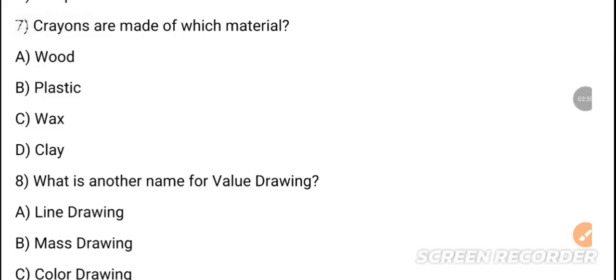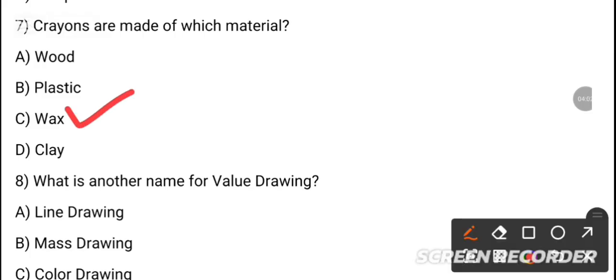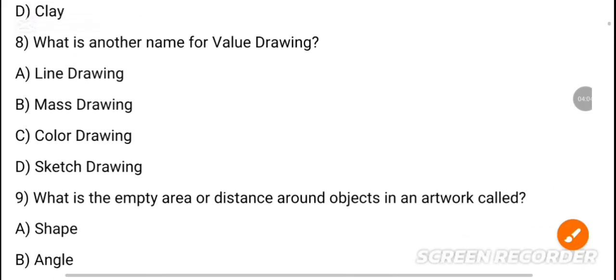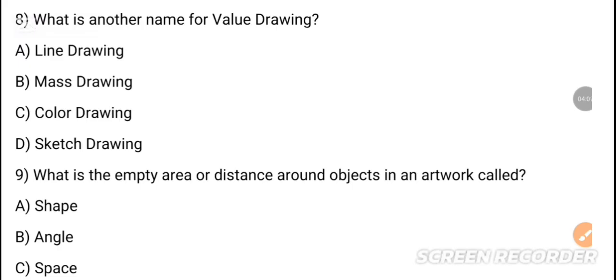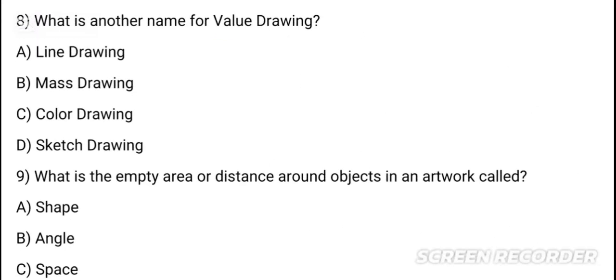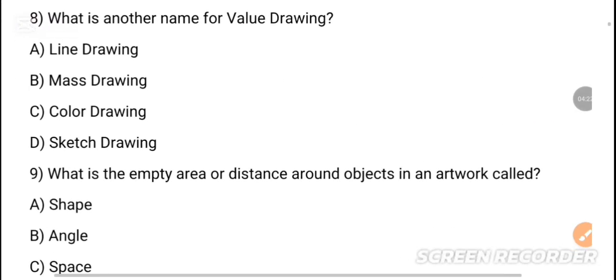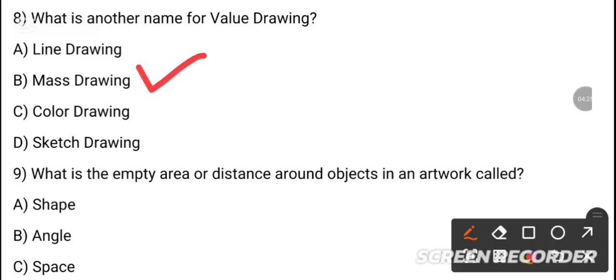MCQ 7: Crayons are made of which materials? Crayons are made of wax. Option C is the correct answer. MCQ 8: What is another name for freehand drawing? The correct answer is option B — contour drawing.